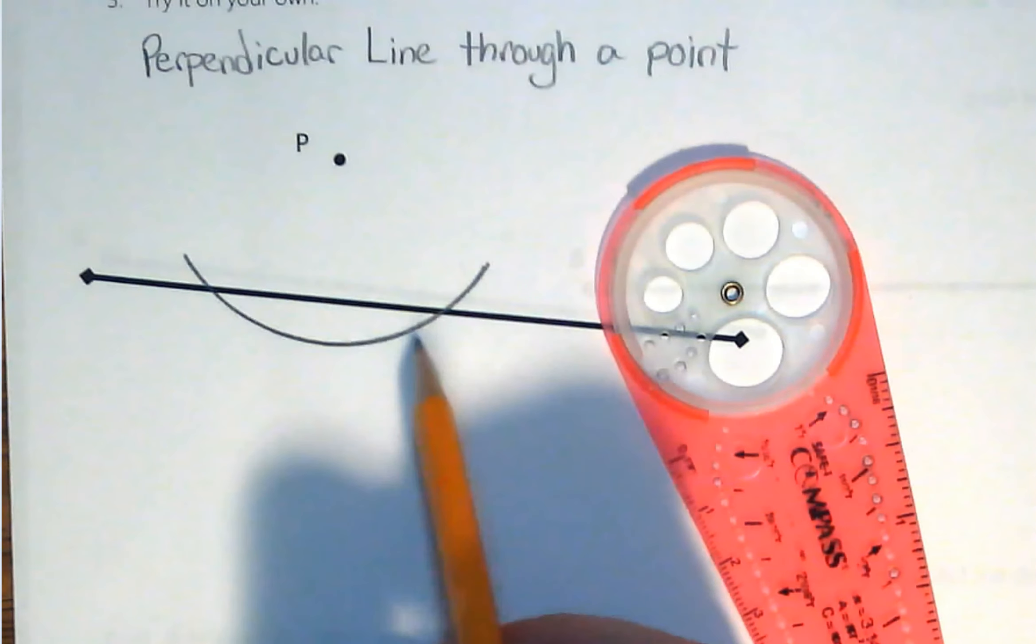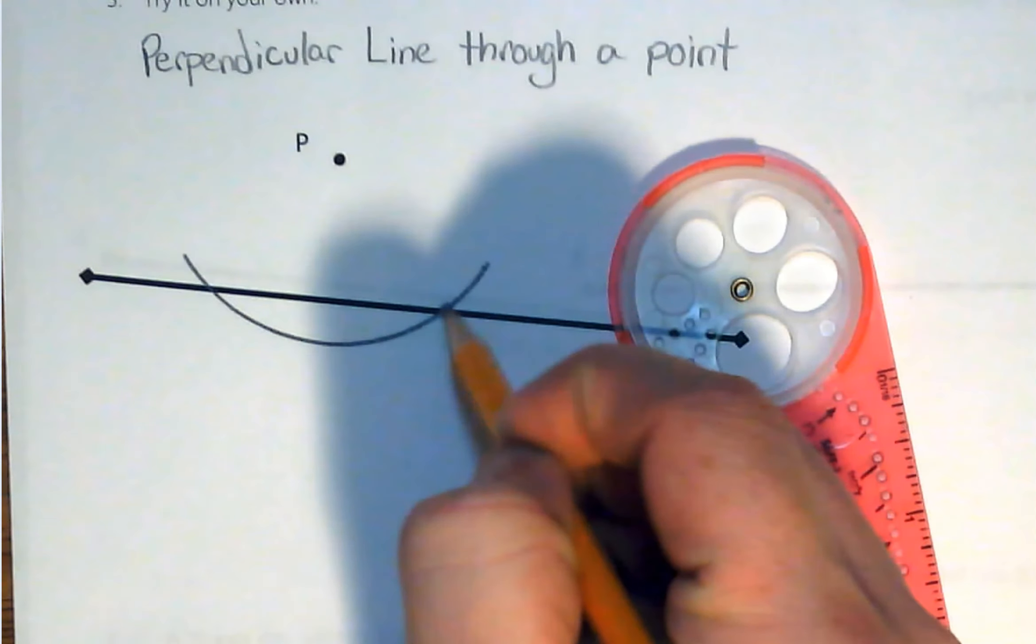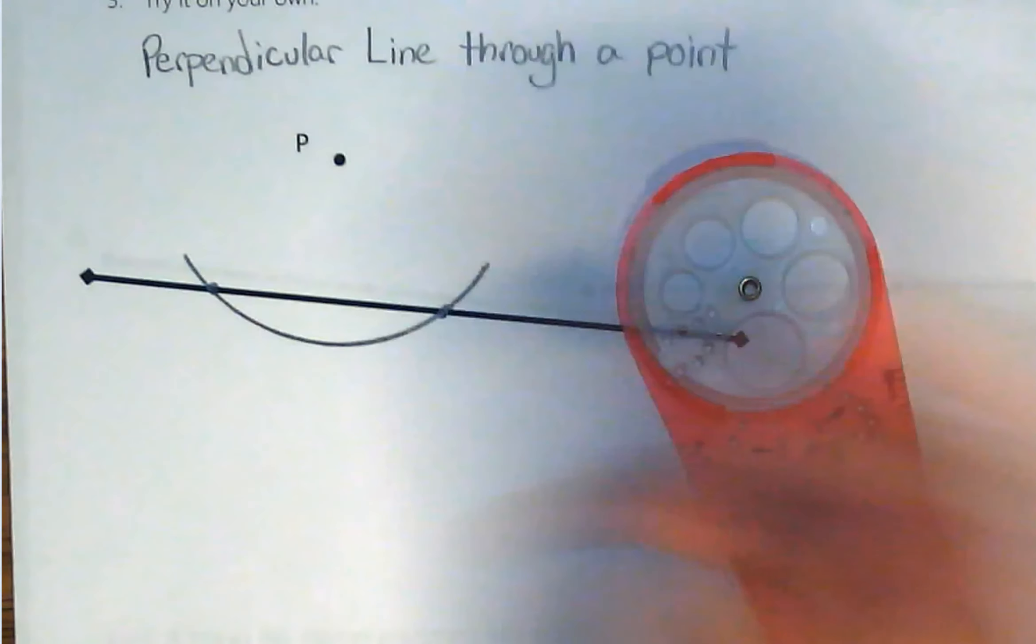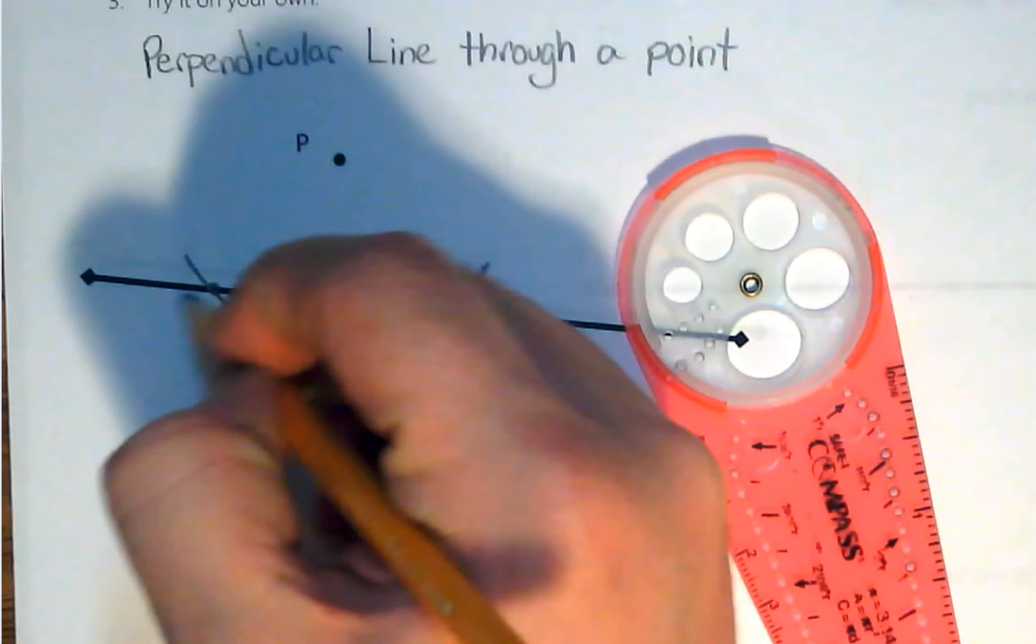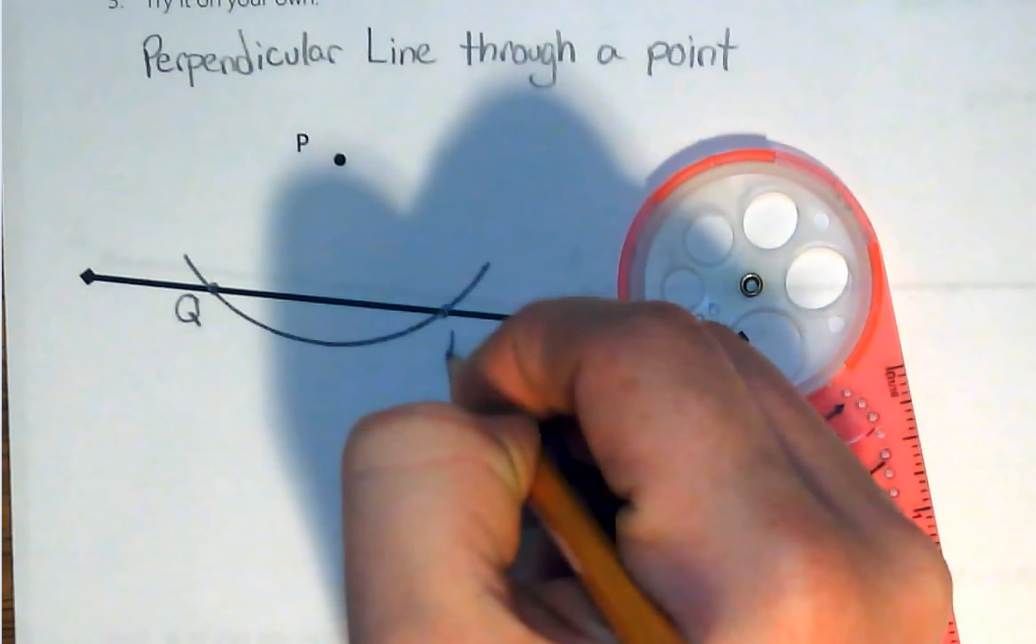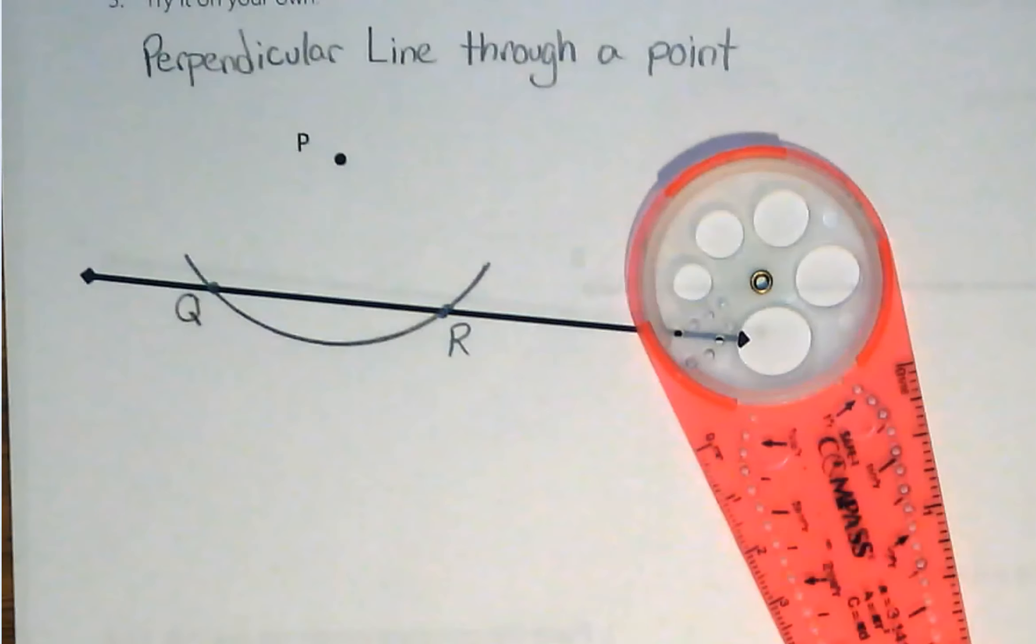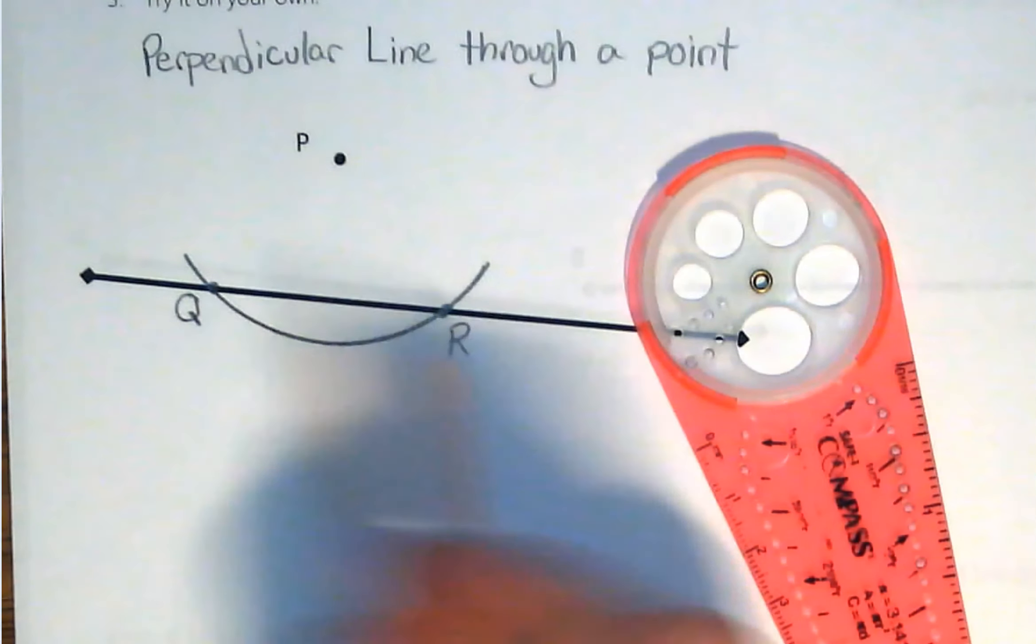Now, the key thing about this arc is that it hits that line in two separate locations. Now what we're going to do, let's go ahead and name those points of intersection. We can call that Q and call that one R. So now we've got these two points of intersection.